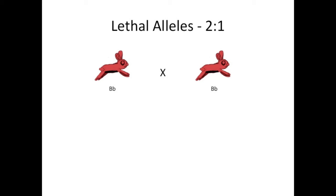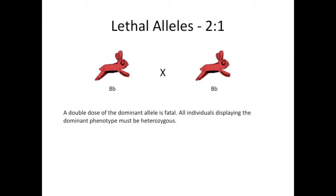A ratio of 2 to 1 suggests lethal alleles. We have two heterozygous dominant bunnies, and when crossed, their offspring are 2 to 1 red to white — not the normal 3 to 1. What's happening is that the homozygous dominant genotype is fatal; at some point in development, things go awry and the red bunny dies. Any red bunny you see must therefore be heterozygous. This happens in humans — certain forms of dwarfism, like achondroplasia, are dominant, but every little person you see is heterozygous because a double dose of the dominant allele is lethal. If you get a question on the MCAT dealing with lethal alleles, pay attention to when it causes death.